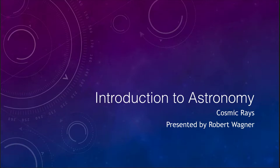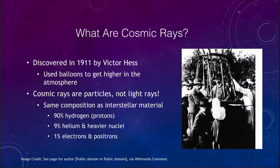Cosmic rays have been known for over a hundred years, and we have studied them since 1911 when they were discovered by Victor Hess, who was using balloons to try to get up higher in the atmosphere. You can see the gondola in the balloon structure, and he would use those to get higher up in the atmosphere.